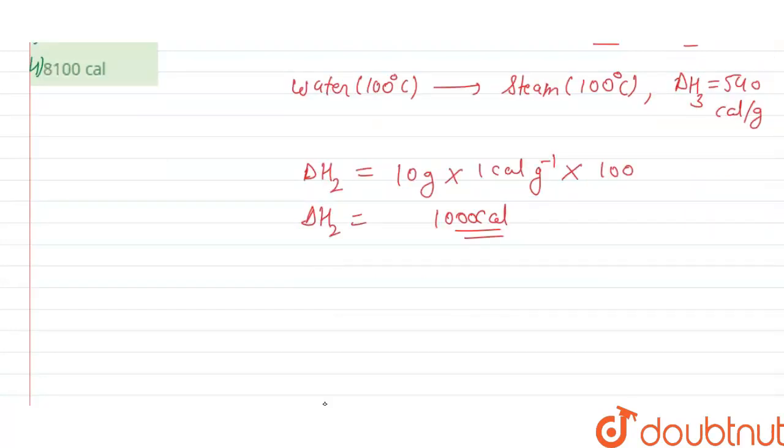Now overall heat involved from 10 gram ice to steam is given as delta H net equals delta H1 plus delta H2 plus delta H3.